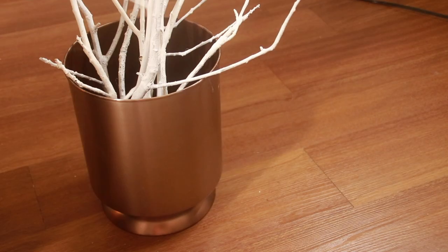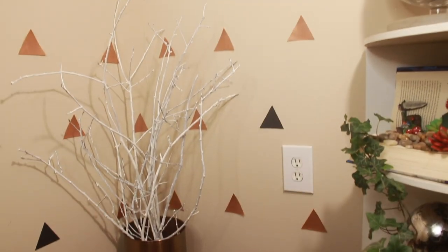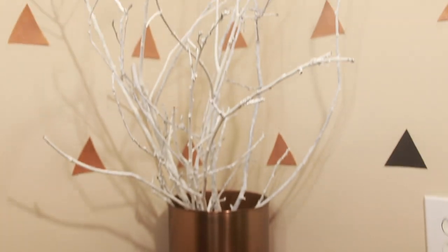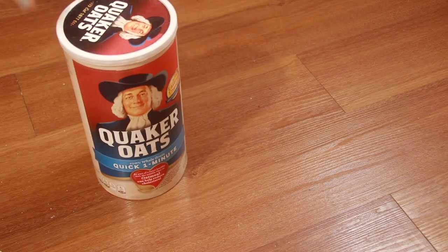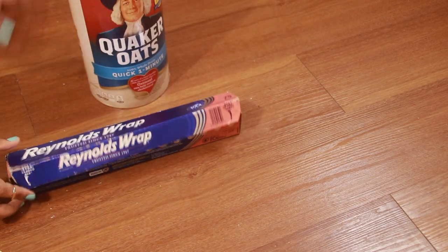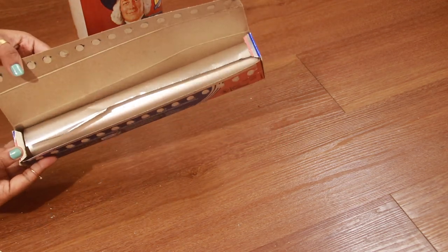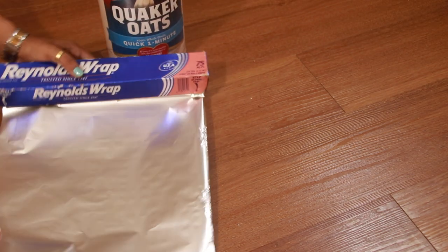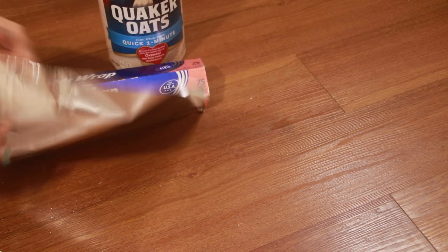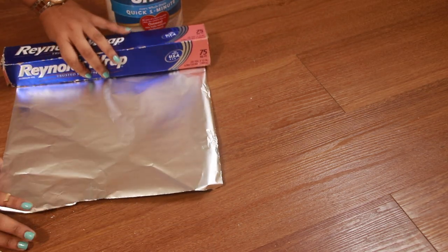For the second one, to add height, I generally reuse empty containers for my DIY projects and contribute my bit towards the environment. And now it's time to use it as a riser for the vase, for which I'm using this aluminum foil to give a contrasting metallic finish without spending much.